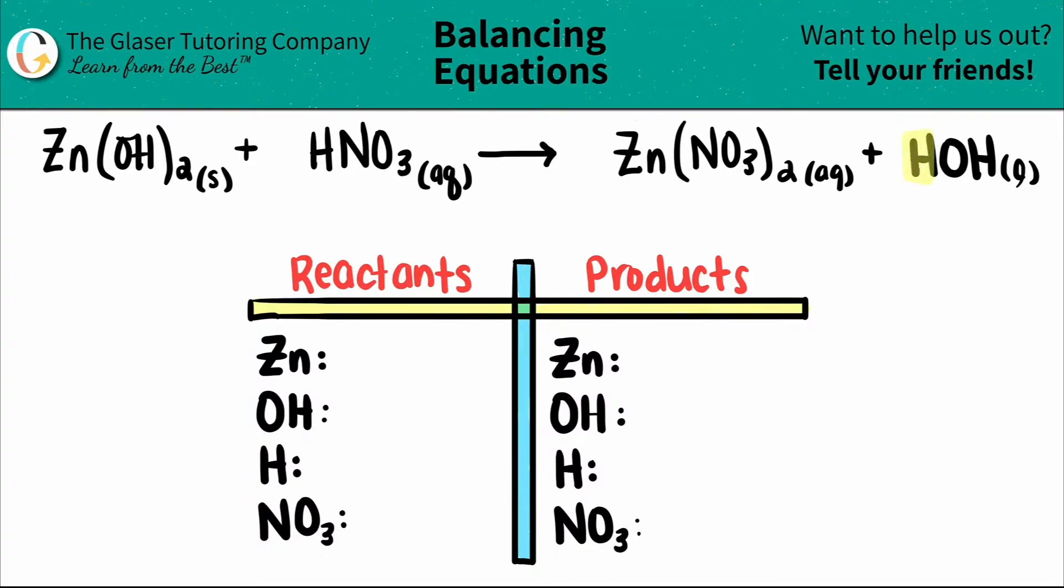The H in the front is going to correspond with the H on the other side, and the OH in the back, which is the hydroxide, is going to be now corresponding with the OH on the other side. So it just makes it a little easier.